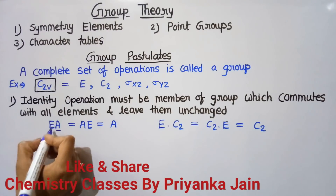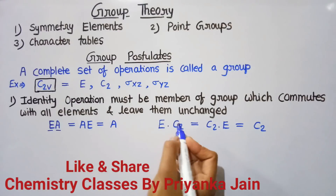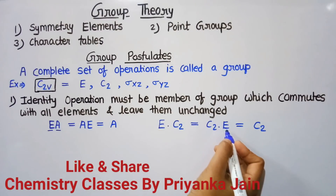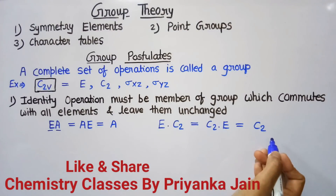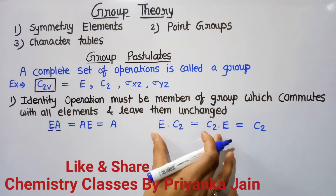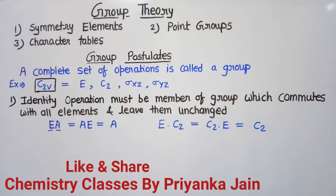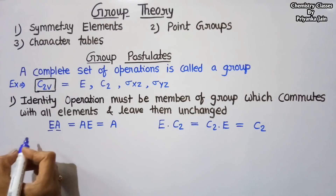We start from the right side and go toward the left side. For example, if we apply the C2 axis and then apply the identity element, it will be equal to applying identity first and then applying the C2 axis, and both will be equal to C2 axis alone applied. This means the two elements can commute. We understand this with the help of the C2v point group, using the water molecule as our basic example.